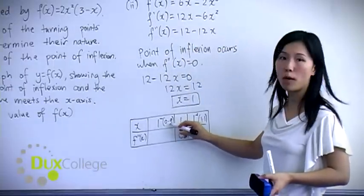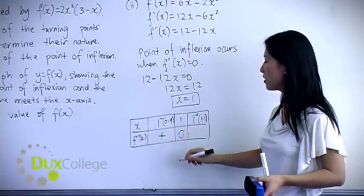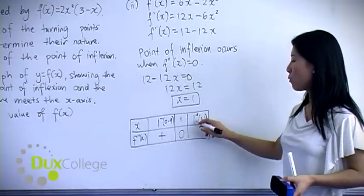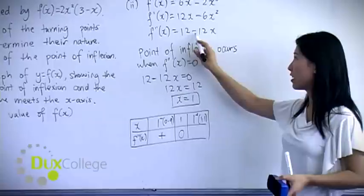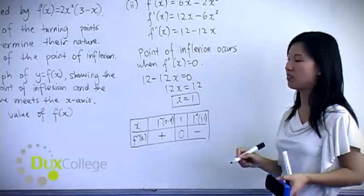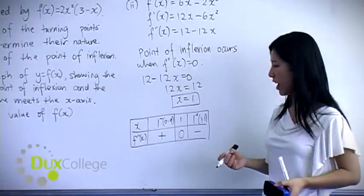When you substitute 0.9 to your second derivative, you will get a positive value. And when you substitute 1.1 into your second derivative, you should get a negative value. You can do all of this in the calculator.